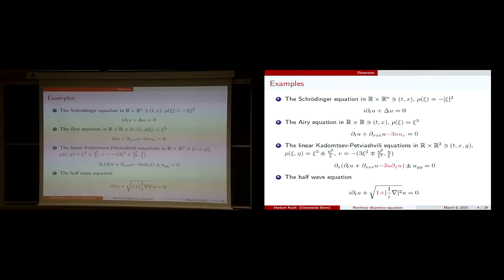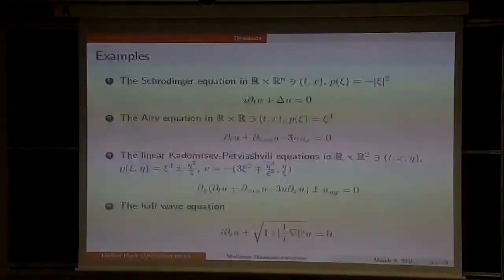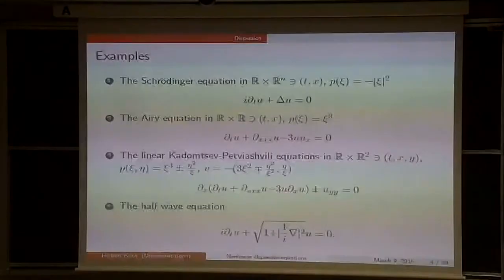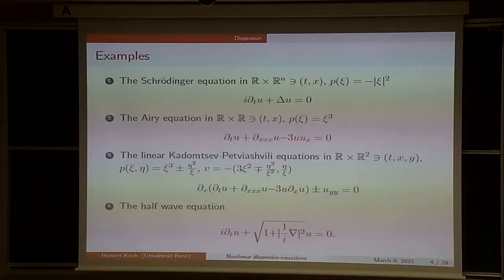Here x is the direction of the wave — it's one-dimensional. t is time. And there is another transversal effect by u_yy, the second derivative with respect to y. The nonlinear KP equation describes water waves similar to the KdV equation but takes into account transversal effects. Depending on whether there's surface tension or not, this line solution is stable or not.